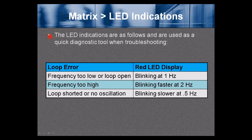LED indicators are used as a quick diagnostic tool when troubleshooting. A loop error — frequency too low or an open loop — is indicated by one blink per second. Frequency too high is indicated by blinking faster than two per second. A shorted loop or no oscillation is indicated by blinking slower at 0.5 per second.